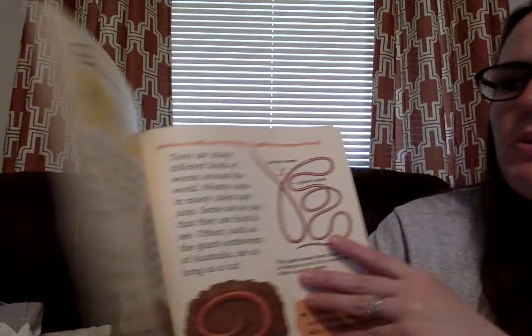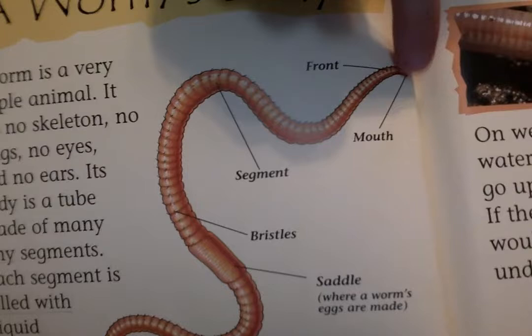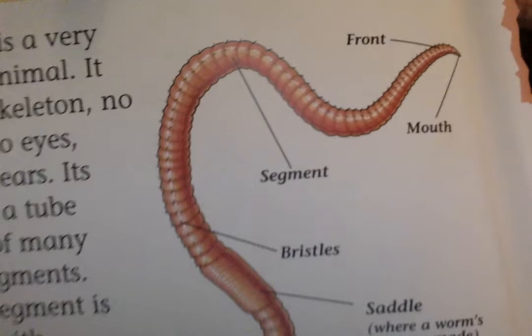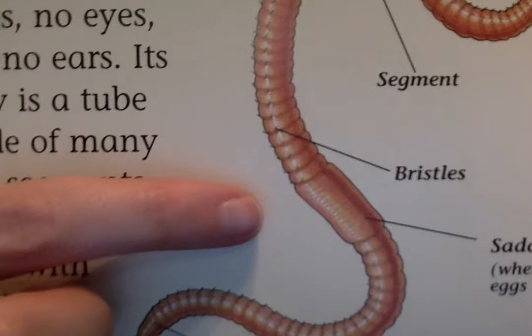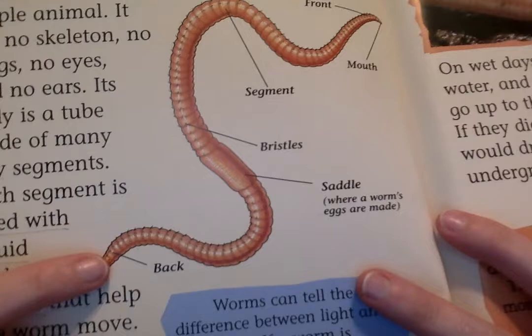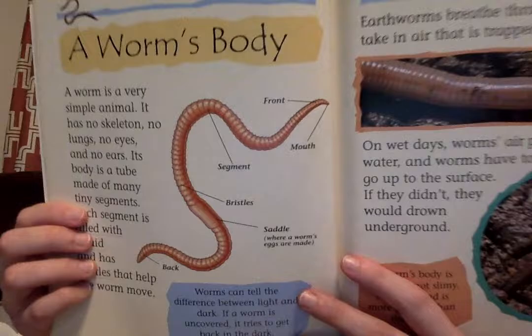I told you we would flip back to this page and look at the diagram a little bit closer. It labels the parts of a worm's body. We have the front, the mouth is up here. These are segments — a segment is another word for a part, so those are synonyms. See all the little segments that make up the worm's body? It also has bristles — little bristles on there. And this is called the saddle; the saddle is where a worm's eggs are made. And then this is the back. So that diagram labeled the parts of the worm's body for us.